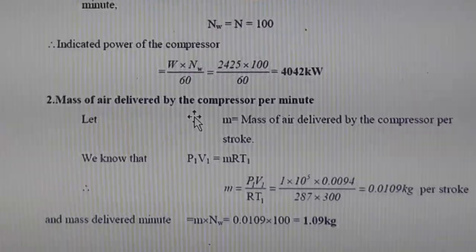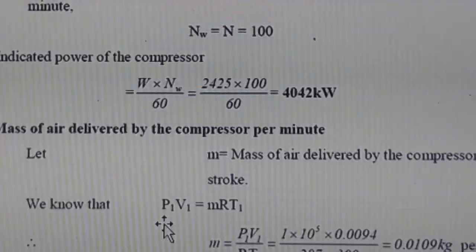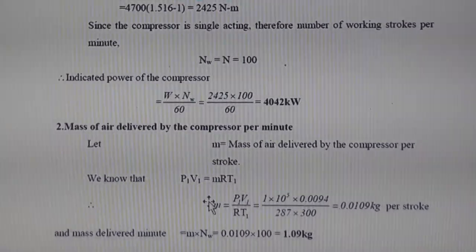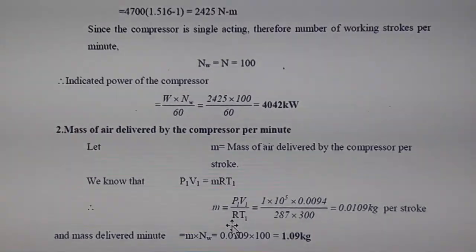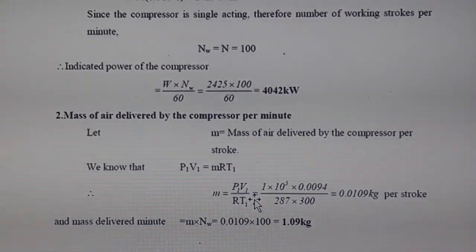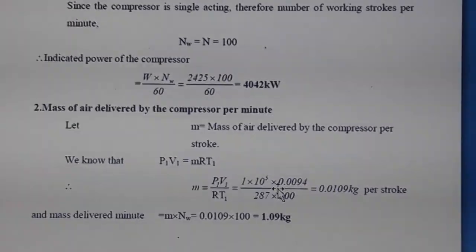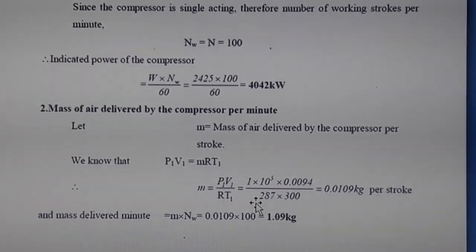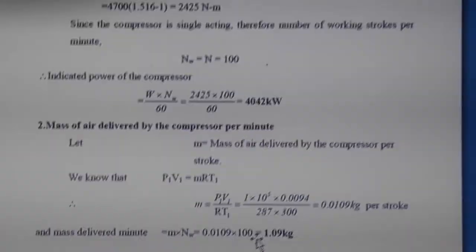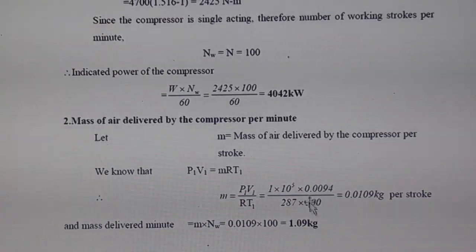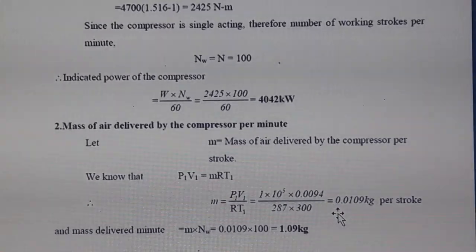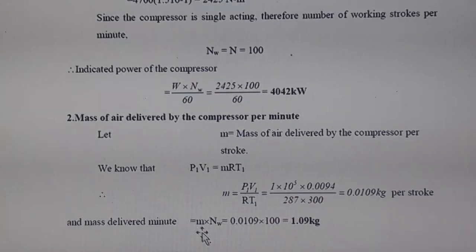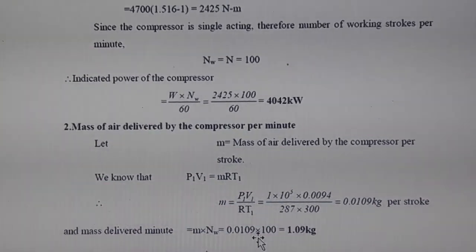To find the mass of air delivered, we use the general gas equation: p1V1 = mRT1, so m = p1V1 / (RT1). With p1 = 1×10⁵ Pa, V1 = 0.0094 m³, R = 287 J/kg·K, T1 = 300 K, the mass is 0.0109 kg per stroke.